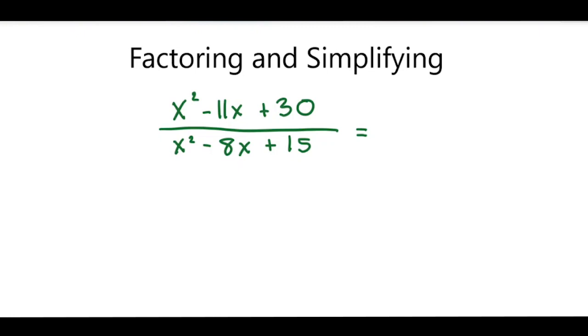But I can factor it into two binomials. I just need to find two numbers that multiply to be positive 30, but add together to be negative 11. So I'll start off with my x and my x in each parenthesis. And two numbers that multiply to be positive 30, but add together to be negative 11, are negative 6 and negative 5.